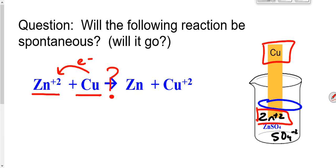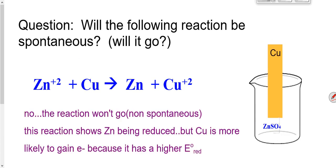We determine this the exact same way as before — start by checking your reduction potentials. In this case, the reaction won't go; it'll be non-spontaneous. This reaction shows zinc as being reduced, but we would expect copper to be reduced — it's more likely to gain electrons, it has the bigger reduction potential, and the bigger one wins. So this reaction will not go as written. We could force it to go using electrolysis, but it won't go on its own.